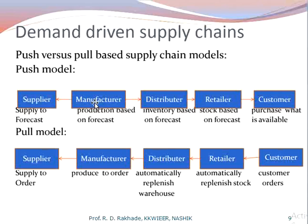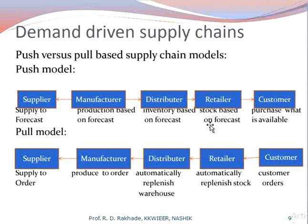In the push model, the manufacturer produces products based on forecast, anticipating that customers will require and purchase them when available. Production is based on forecast; the manufacturer produces certain products and passes them to the distributor as inventory based on forecast, then supplies to the retailer as stock based on forecast, and the retailer lastly supplies to the customer. In both models, the product or service ultimately reaches the customer.